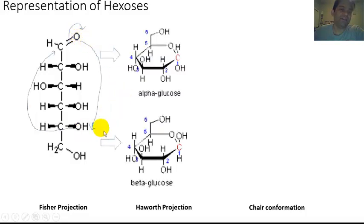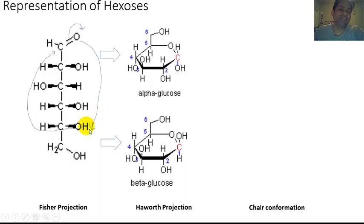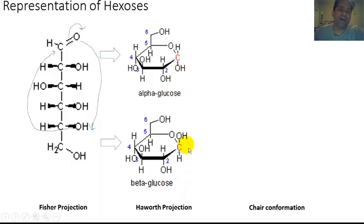The net effect is you can have an OH group that originally came from this oxygen, picked up this H, and now a ring has formed. That new OH group can be below the plane of the Haworth projection or above the plane of the Haworth projection.